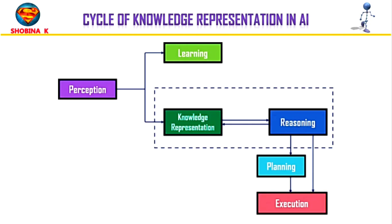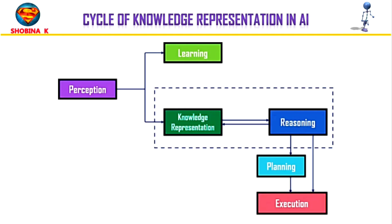The next component is the learning component, which learns from the data captured by the perception component. The goal is to build computers that can be taught instead of simply programmed. Learning focuses on the process of self-improvement. In order to learn new things, the system requires knowledge acquisition, inference acquisition, heuristics, faster searches, etc.